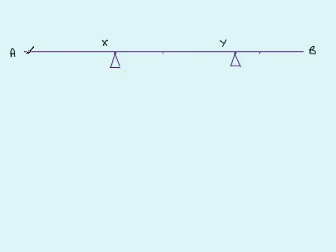I've started by drawing our rod AB resting on our two supports X and Y. Because the rod is uniform, the weight will act in the middle. With a mass of four kilograms, the weight will be 4g Newtons.